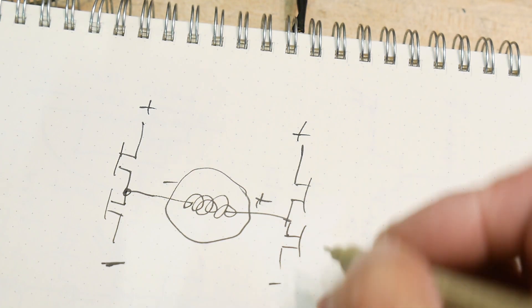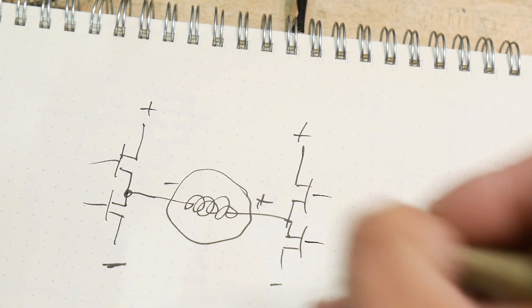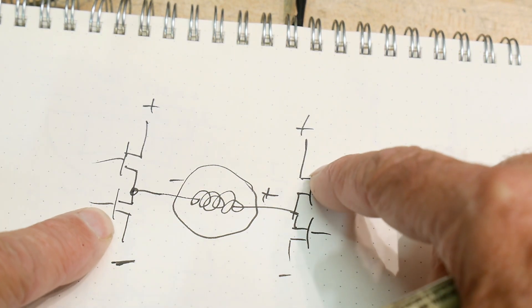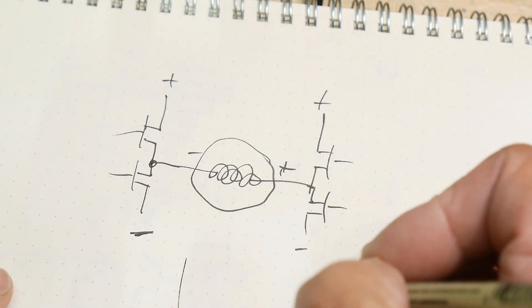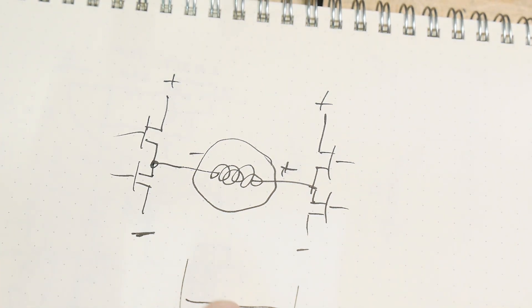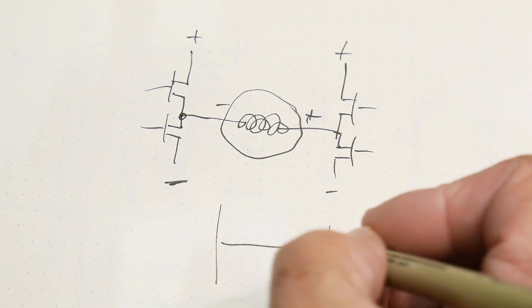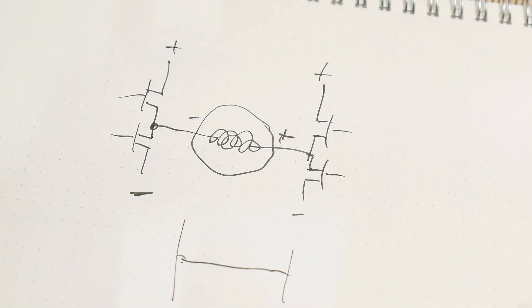So how do you turn these transistors on? Well you turn them on in pairs. So if you turn these two on then you have plus minus, if you turn these two on then you have plus minus. And this kind of forms the shape of an H, so it's an H bridge.